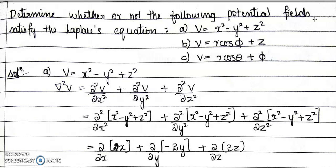The first problem is to determine whether or not the following potential fields satisfy the Laplace equation. The first potential field is V = x² − y² + z². The second case is V = R cosφ + z, and the third case is V = R cosθ + φ.